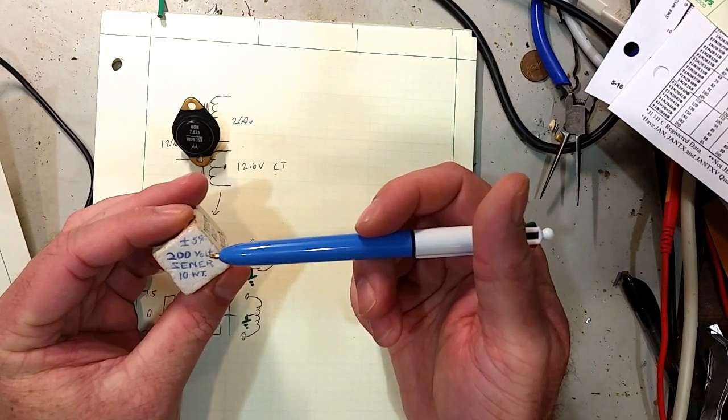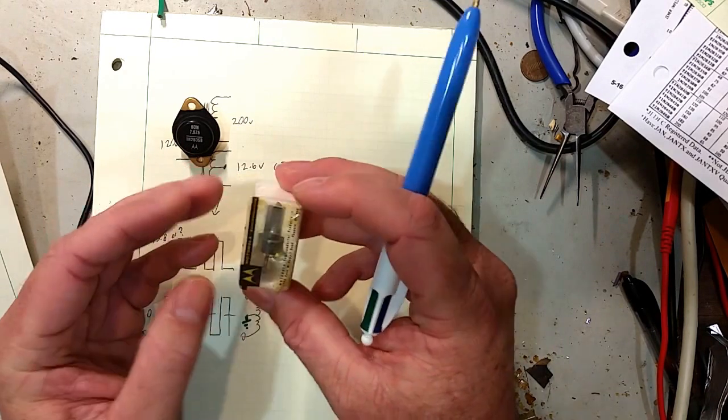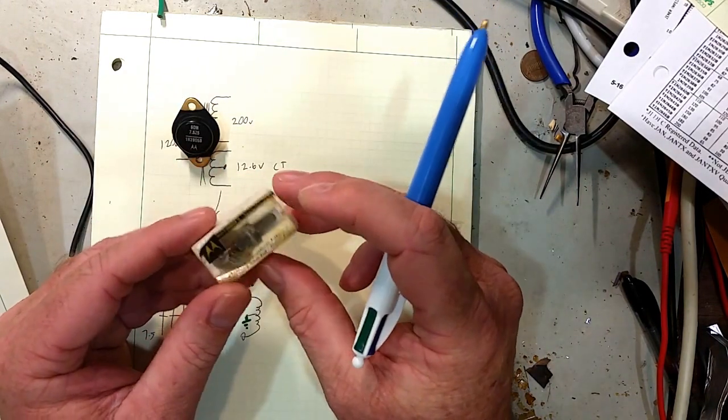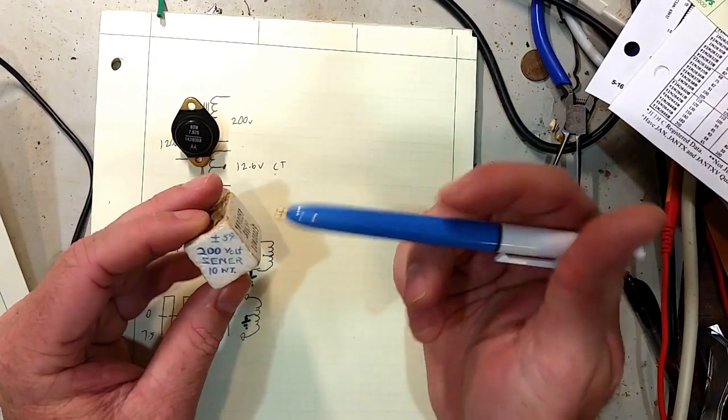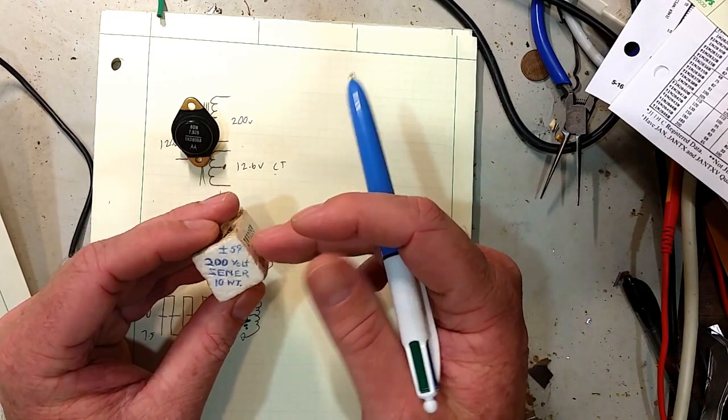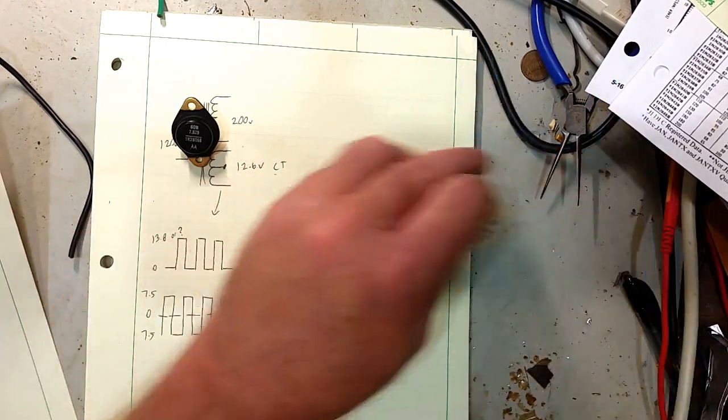And the ratings, I did double check this, are right here. It's a 200 volt Zener, 10 Watts. So not the same 50 Watts that this has, but 10 Watts is still pretty healthy. 200 volts. I'm not sure what that was used for. Actually, that could be useful. I've got a lot of tube gear that I'm getting ready to build some power supplies for. So this one may actually see some use.